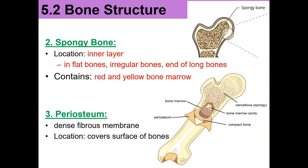Spongy bone is the inner layer of the bone, found in flat bones, irregular bones, and at the ends of long bones. Spongy bone contains red bone marrow, which is the site of blood cell synthesis where red blood cells, white blood cells, and platelets are produced, and yellow bone marrow, which is the site of fat storage. The periosteum is a dense fibrous membrane — peri means around — and it covers the outer surface of the bones.